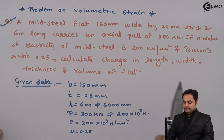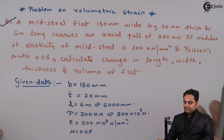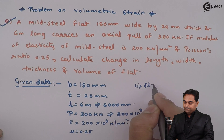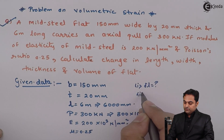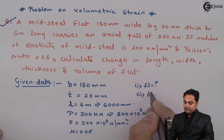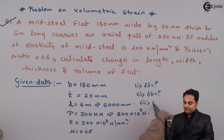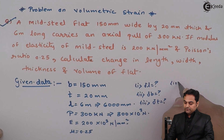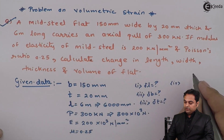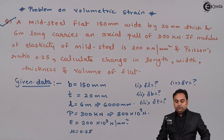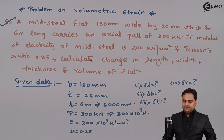The questions are: calculate (1) change in length, (2) change in width delta B, (3) change in thickness delta T, and (4) change in volume of the flat. These are the four parts we need to solve.